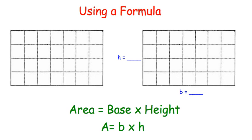We're going to go ahead and find the base by counting the squares on the bottom: 1, 2, 3, 4, 5, 6, 7 — that is our base. Then we'll count our height: 1, 2, 3, 4 — that is our height.